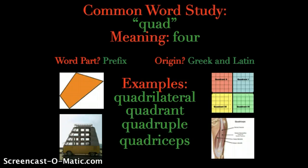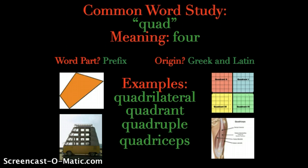Today's word we are going to look at is quad. The meaning of quad is four — it simply means four. The word part itself is a prefix; you will see it at the beginning of an existing word. The origin of quad is both Greek and Latin because it is actually the word for four in both of those languages.